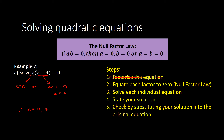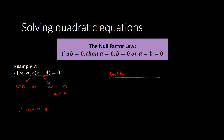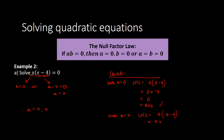Let's do our last step and check. Substituting x equals 0: the left-hand side is 0 times (0 minus 4), which is 0 times negative 4, which is 0 — that matches our right-hand side, so that solution works. Now checking x equals 4: the left-hand side is 4 times (4 minus 4), which is 4 times 0, which is 0 — also matches. Both solutions are correct.